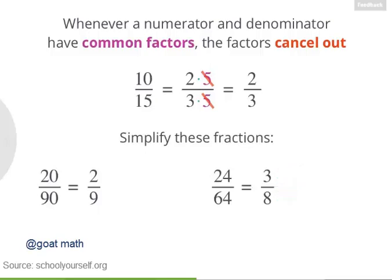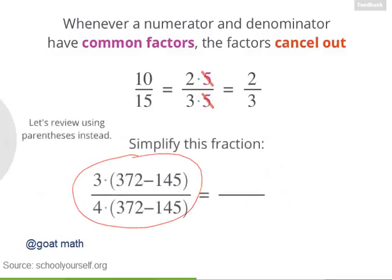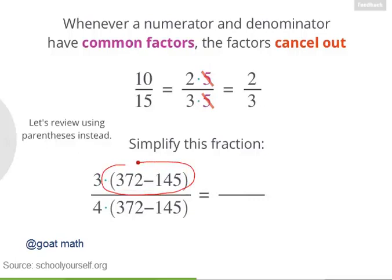And you can always check this with a calculator, making sure that 24 divided by 64 equals 3 divided by 8. Next, try simplifying this expression. This may look intimidating at first, but don't worry. You might not have to evaluate 372 minus 145, since it's a factor in both the numerator and the denominator.